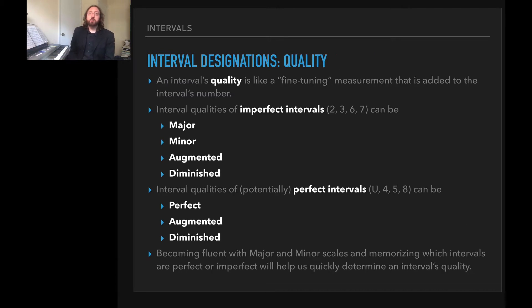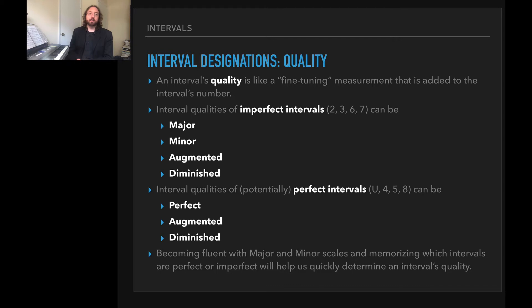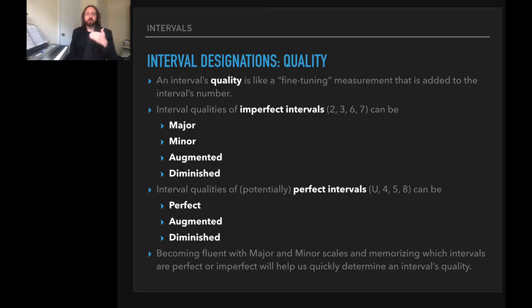So let's now move on to quality designations. An interval's quality is like a fine-tuning measurement that is added to the interval's number to help us understand the difference between a variety of sevenths, for instance. All of these intervals are different kinds of sevenths, but their quality is different. You'll recall that we just talked about imperfect intervals and potentially perfect intervals — the interval qualities will be different, with a different list for each, though you'll see similarities between them.